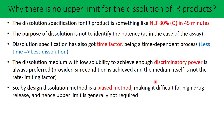If you understand the above point, you can easily understand that the dissolution method by design itself is a biased method — because it makes it difficult for high drug release, and hence an upper limit is generally not required. So by design it is a biased method: you are trying to limit the rate of release to achieve the required discrimination, and hence there is no question of talking about a higher limit for dissolution.